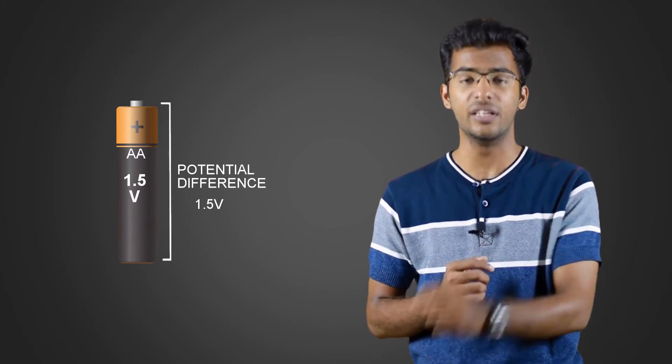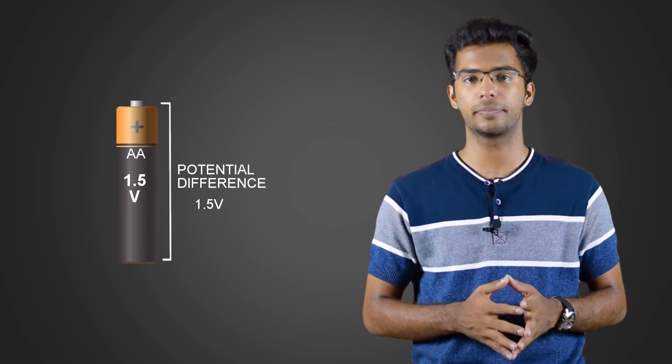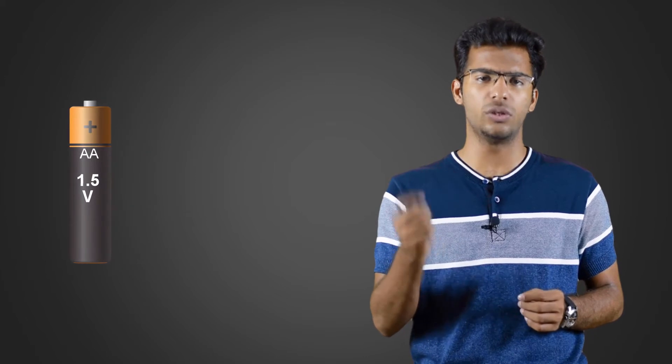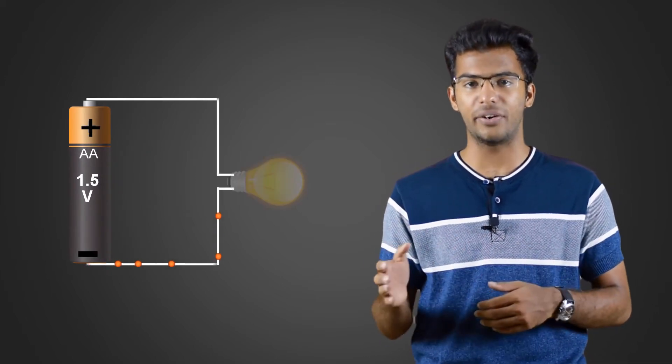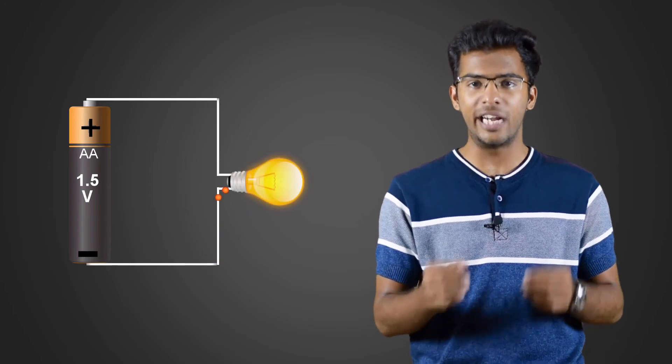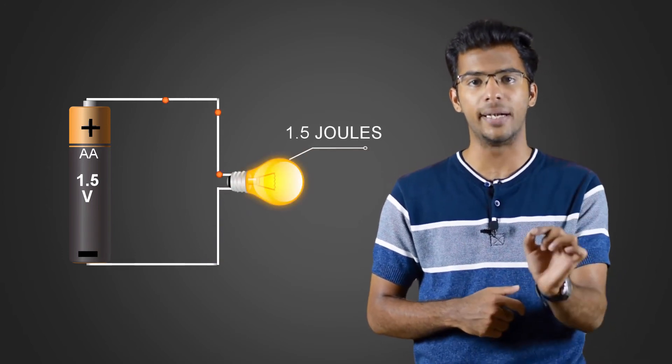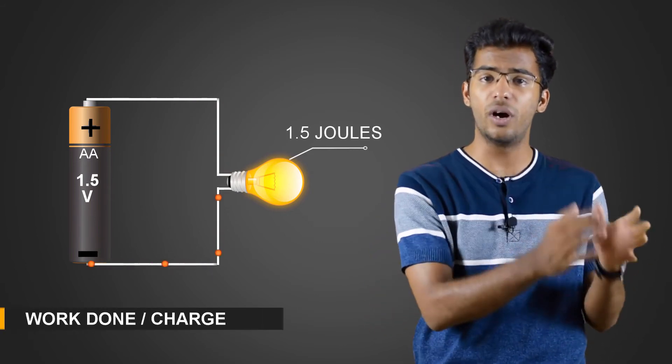One more way to understand this 1.5 volts is: if a charge moves from the negative end of battery to the positive end, it will do 1.5 joules of work on an element like a bulb or a resistor. This is the work done per charge.